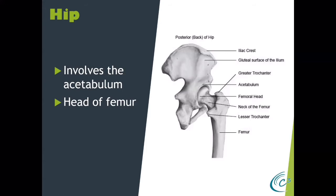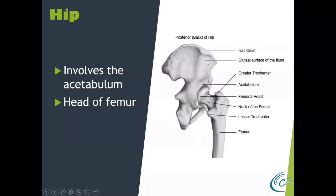You can dislocate this joint, but it takes an awful lot of energy — a major car accident, a fall from height — to dislocate it. We have the head of the femur, the neck of the femur right through here, and different parts of the trochanter. Different hip fractures occur at different locations — a fracture of the neck of the femur is treated differently than a subtrochanteric fracture. When you're reading the operative or x-ray report, you need to know exactly what part of the anatomy we're talking about and what the most appropriate treatment is.